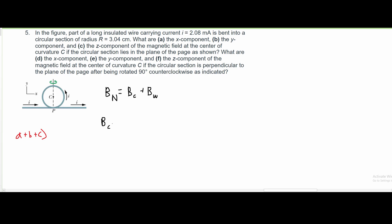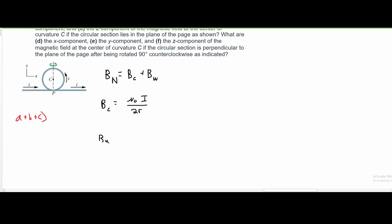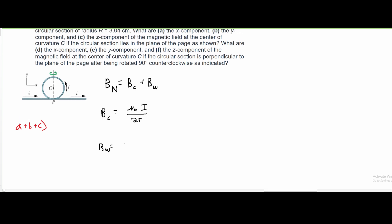The B of our circular is going to be equal to the constant μ₀ times the current i over 2πr. Our B_w is going to just be the regular magnitude where we have μ₀ times i over 2πr. Once we have these, we can take them and plug them into our B net.